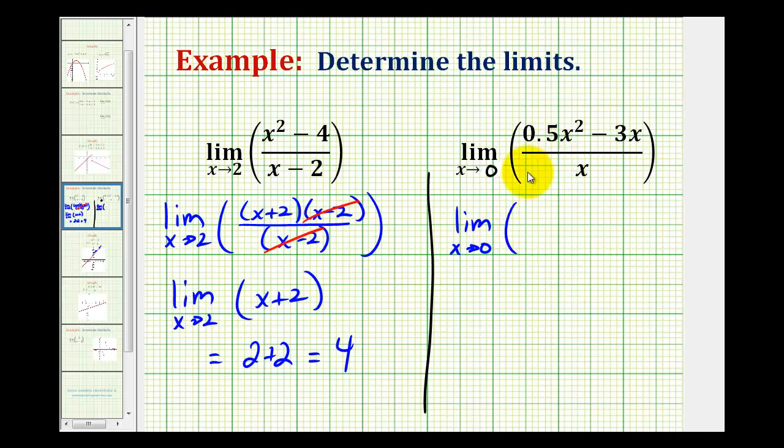So we have a common factor of x in the numerator. So we're left with 0.5x minus 3 all over x. And x over x simplifies out, simplifies to 1.